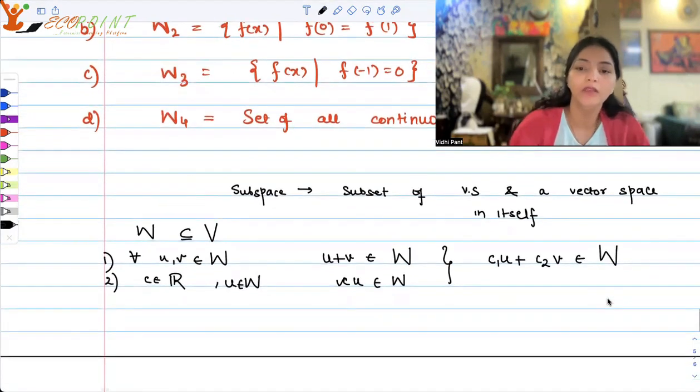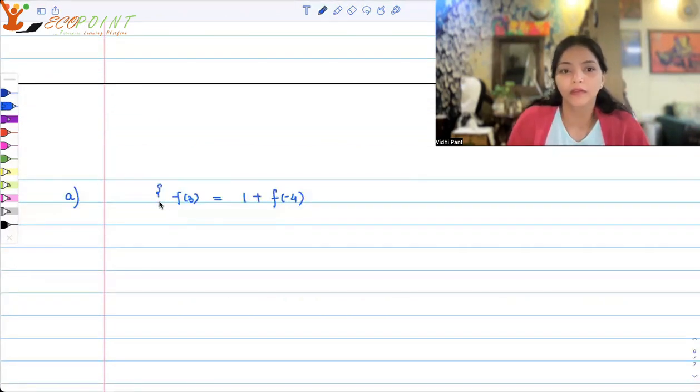Okay, so is that happening here? Let's check. Let's start with the first option. So the first option is the set of all functions such that f(3) is equal to 1 plus f(-4). So let f and g be two functions in this space.